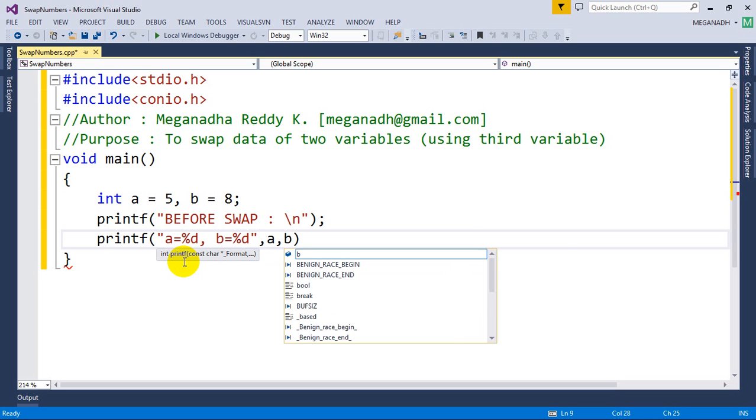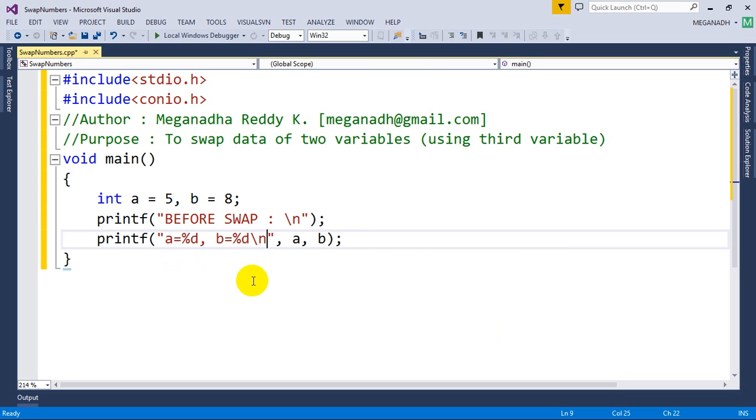Now I want to swap them. Now as we discussed we are going to use a third variable t. Now as discussed in the monkeys example, what we are going to do here is first, t will take data from a.